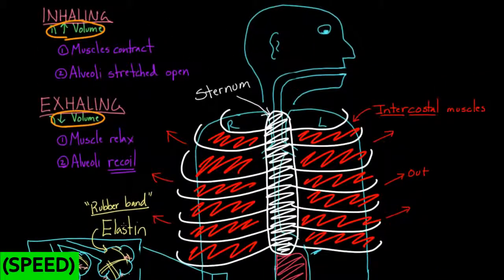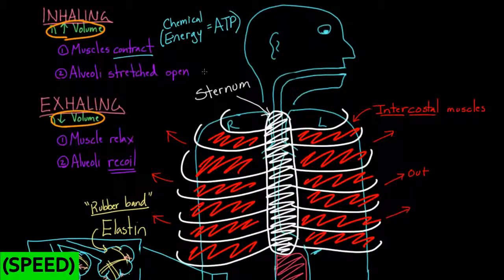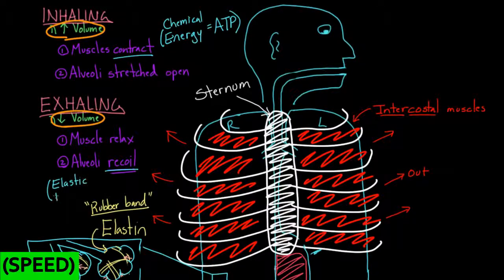Inhaling, the way that we actually increase the volume is by pulling things open through contraction. And this actually requires energy - you can't contract a muscle without spending chemical energy. So this takes chemical energy, and we usually think of this molecule ATP as the specific type of chemical energy we're going to use. And to exhale, when you reduce the volume, it's going to be driven by this elastic recoil. So that's a type of elastic potential energy.